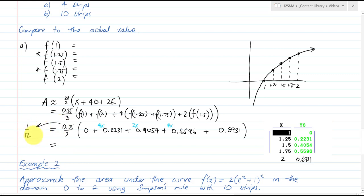So I get 1/12 of 4 times 0.2231 plus 2 times 0.4054 plus 4 times 0.5596 plus 0.6931. And the answer is 1/12. So I'll write it down to 6 decimal places, I don't need to go that far.